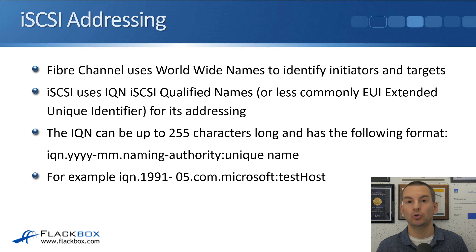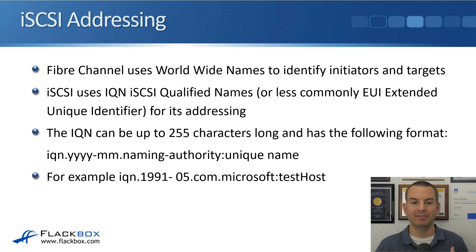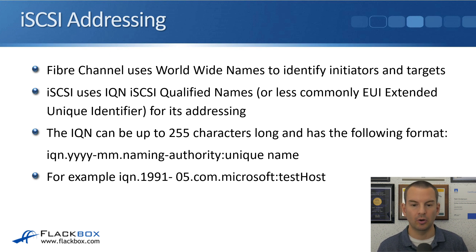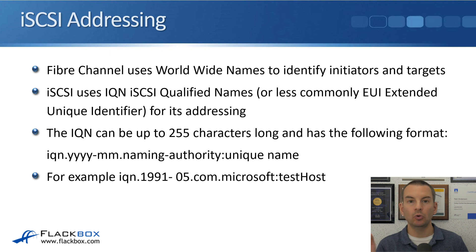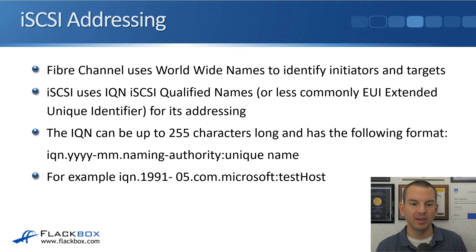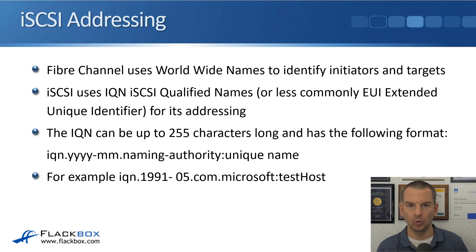The IQN can be up to 255 characters long and has the format: IQN, then a dot, then the date, then the naming authority, then a unique name for that host. For example: IQN.1991-05.com.microsoft:testhost, where testhost is the name of the host. Don't worry if you see a really old date on an IQN — this format was assigned way back when vendors first started supporting IQNs, so an old date is typical.